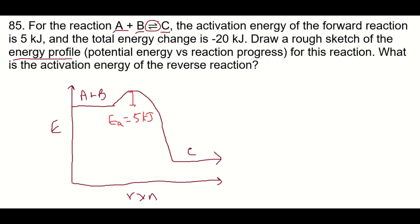So the change in energy from the reactants to the products, we'll call that delta H for now. We'll get more into that when we get to thermochemistry is negative 20 kilojoules. So that's an exothermic reaction. This reaction is releasing energy.